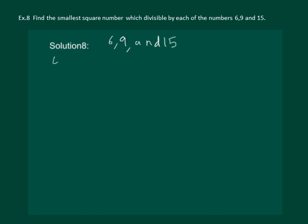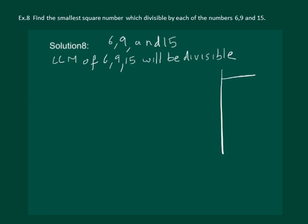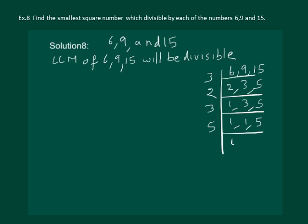We know that the LCM of 6, 9, and 15 will be divisible by all three. So let us calculate the LCM of 6, 9, and 15. The LCM of the 3 numbers is 3 × 3 × 2 × 5, which is equal to 90. And 90 is divisible by 6, 9, and 15.